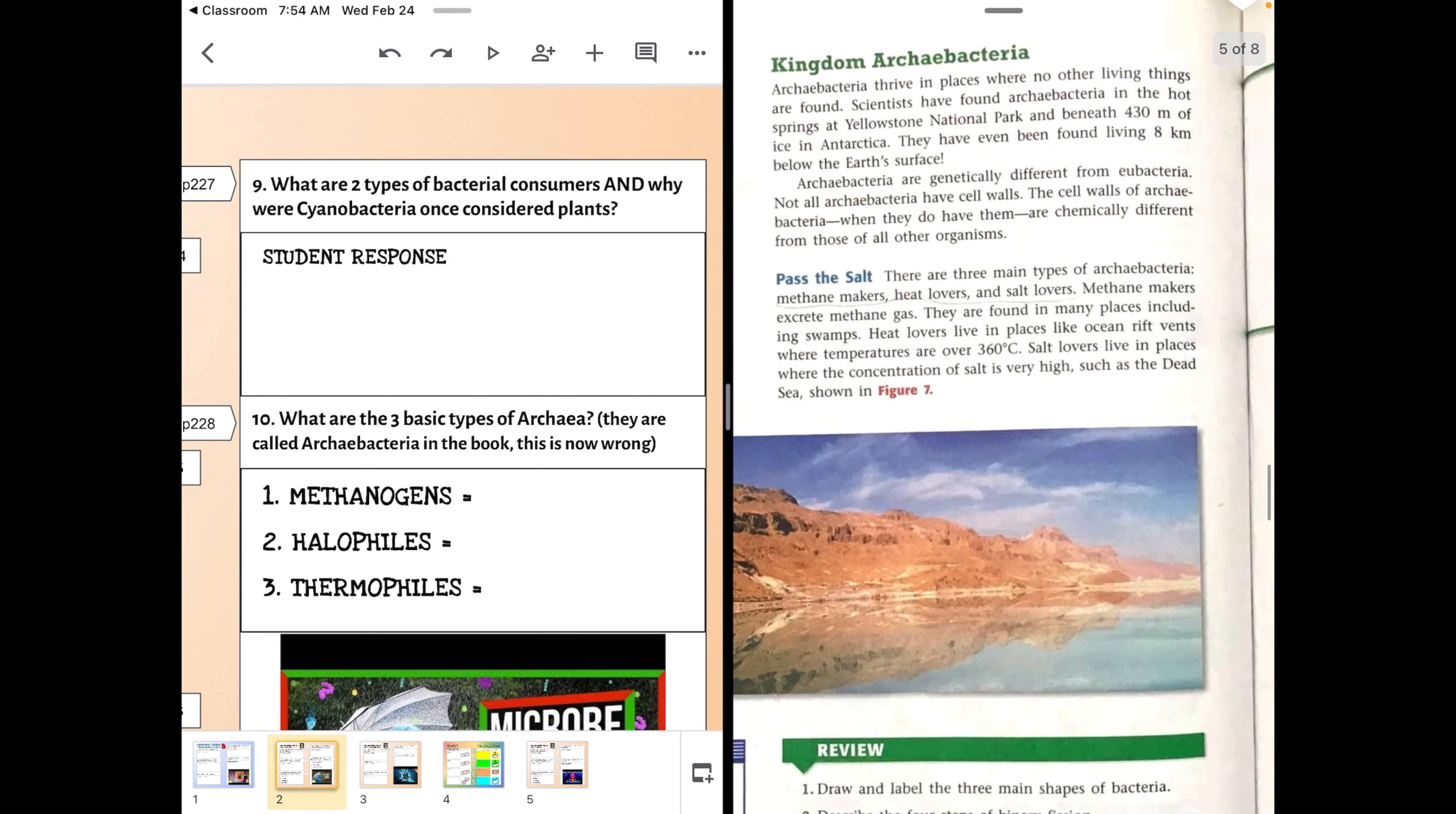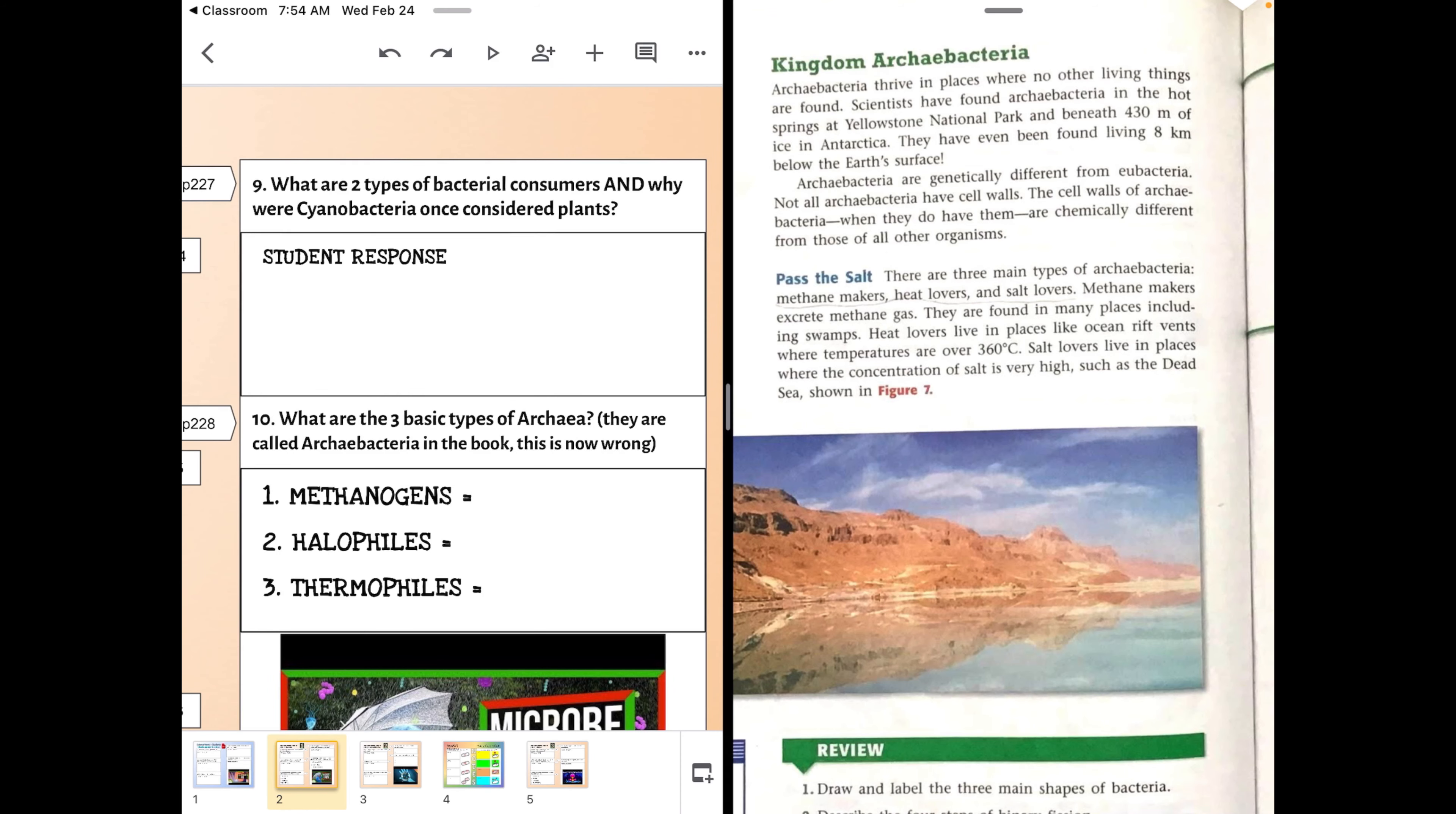Question ten is about archaea. Now the book calls them archaea bacteria, which is technically wrong. These are their fancy names: methanogens, halophiles, thermophiles, that the book didn't think you could handle. Methanogens should be self-explanatory. What do they do? In one or two words, what is their thing? Halophile, phile means to love. Thermophile, therm is like thermometer, that's a hint, and phile, again, means to love. They love certain ridiculous conditions.